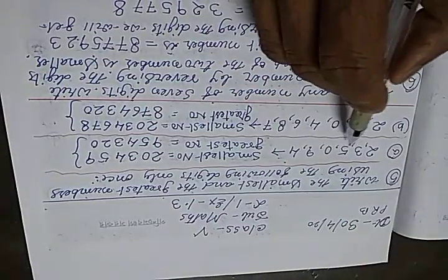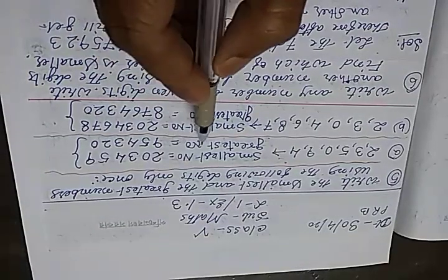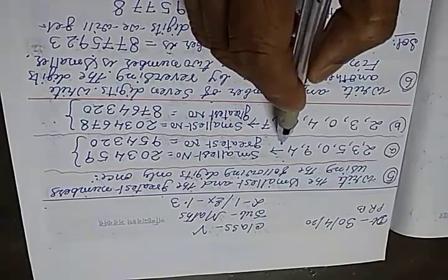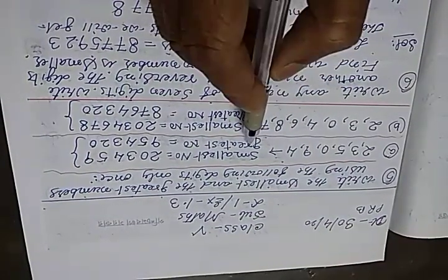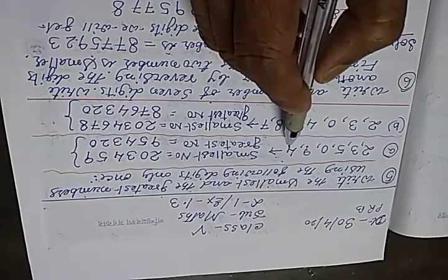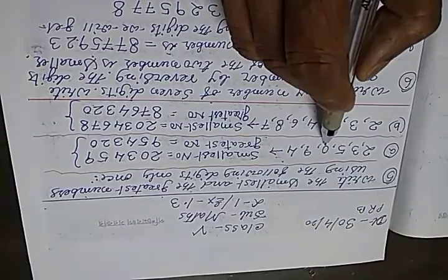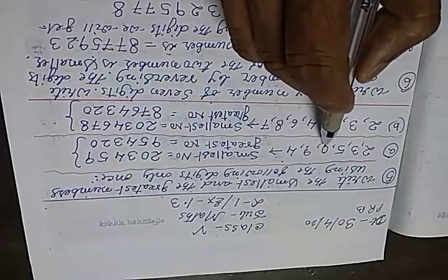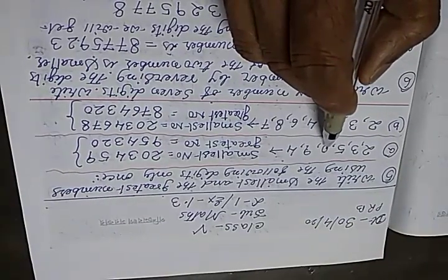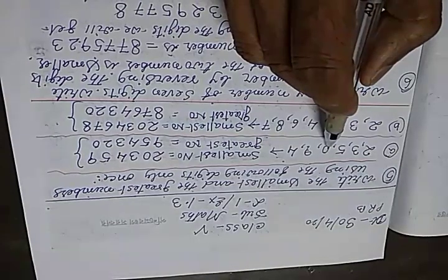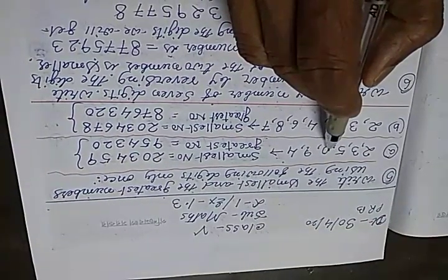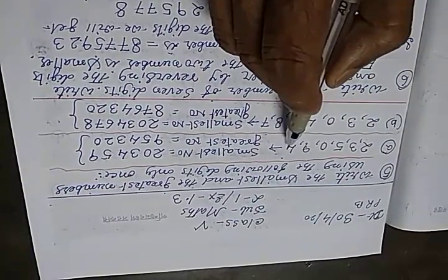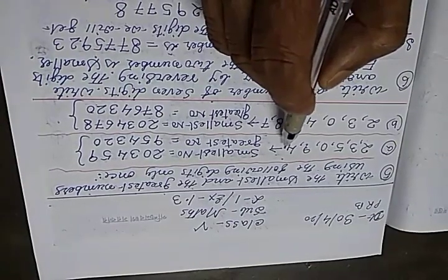First of all, you have to write the smallest number and then you have to write also the greatest number using all the digits but one time. What is the smallest digit here? You see that 0 is the smallest digit obviously. But you cannot use 0 at first because if you put 0 it will not be a 6 digit number, it will be a 5 digit number.